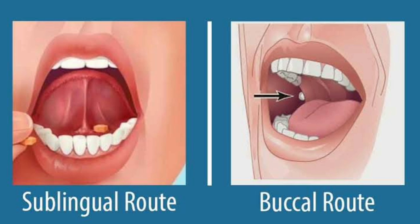Now we move toward the second route, that is the sublingual route. 'Sub' means under and 'lingual' means tongue. So by this route the drugs are placed under the tongue. Absorption takes place through the buccal mucosa, because in the buccal mucosa there is a bed of capillaries through which the drug is rapidly absorbed and reaches directly into the blood circulation. For example, nitroglycerin and Angised, which is used in angina pectoris; isosorbide (Isordil), which acts as a coronary vasodilator; and isoprenaline, which acts as a bronchodilator. By this route, drugs are saved from intestinal enzymes.